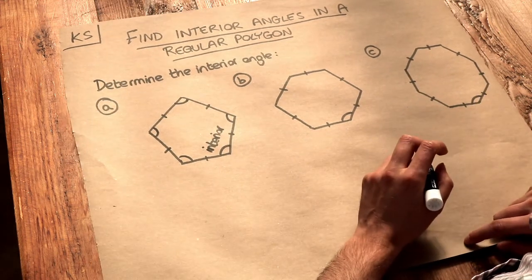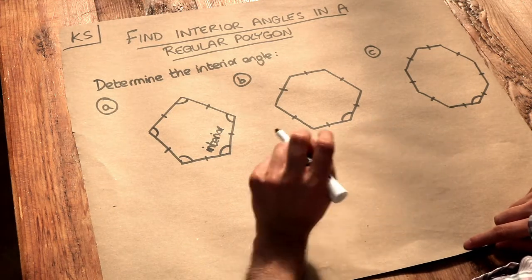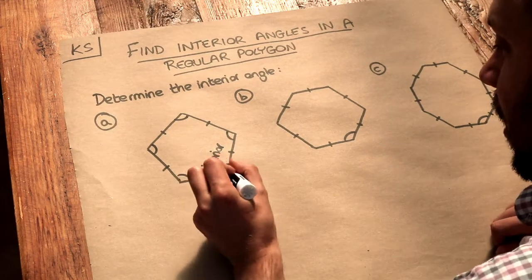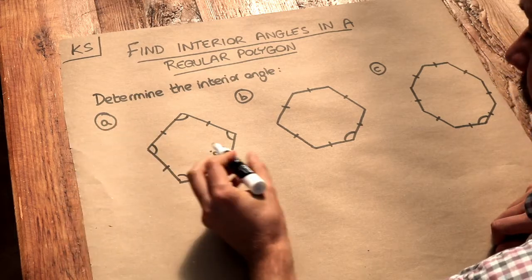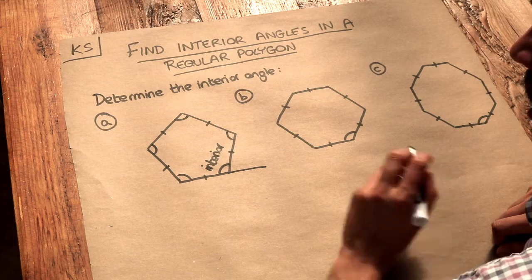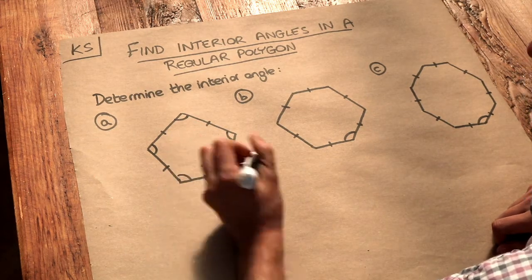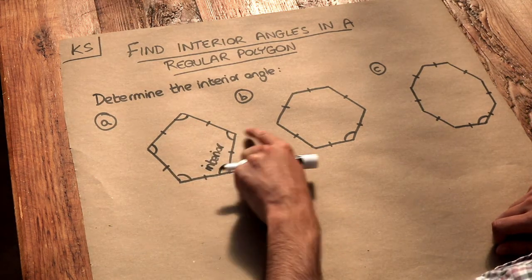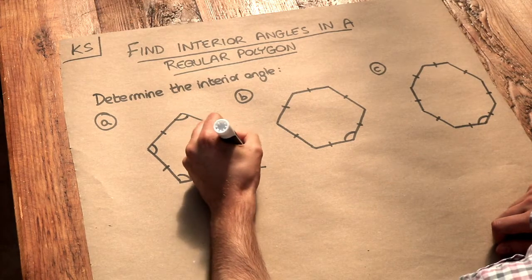In a previous video we explored how we could find the exterior angle of any polygon. Remember, the exterior angle is not this outside angle here—it's when we extend out an edge of the shape, any edge, and it's that angle between the extended edge and another edge of the shape. So that's the exterior angle here.